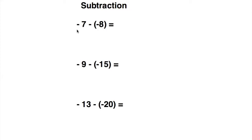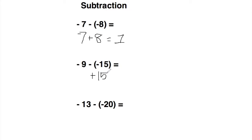For the first one, it would be negative seven, and the negative eight becomes positive because two negatives together become a positive. So it's negative seven plus eight. Using the commutative property, eight minus seven is one, so the answer is one. Same thing for the next: negative nine becomes plus 15 — 15 minus nine equals six, so the answer is six. For the last one, it becomes plus 20 — 20 minus 13 is seven, so the answer is seven.